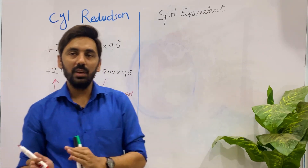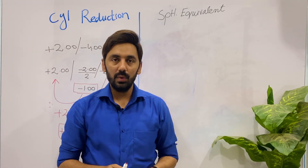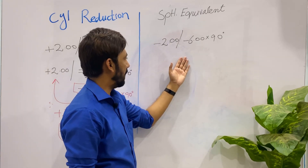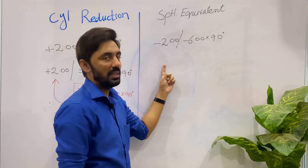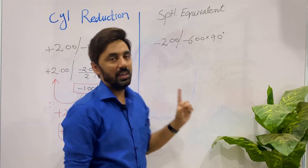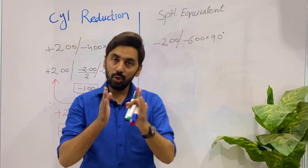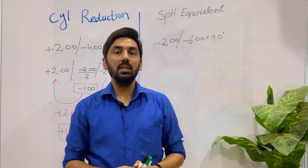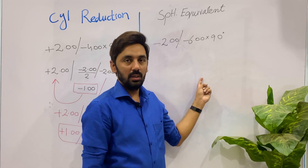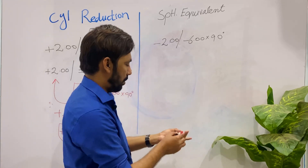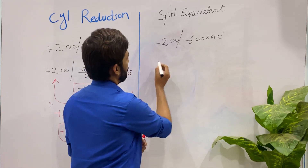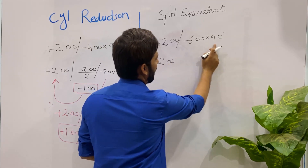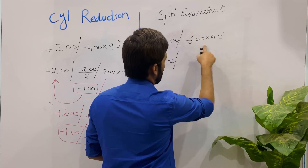This is cylindrical reduction. Now let's compare it with spherical equivalent. In cylindrical reduction, as I told you, it is your choice how much cylinder you want to reduce. But in spherical equivalent, you are not going to choose — the procedure is fixed. Let's take the example: minus two spherical with minus six cylinder at 90 degrees.